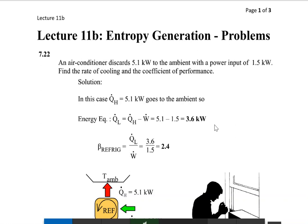Lecture 11b: entropy generation. We are going to have a related problem. An air conditioner discards 5.1 kilowatts to the ambient with a power input of 1.5 kilowatts. Find the rate of cooling and the coefficient of performance. Ambient would mean the outside temperature or the temperature in which you are working.